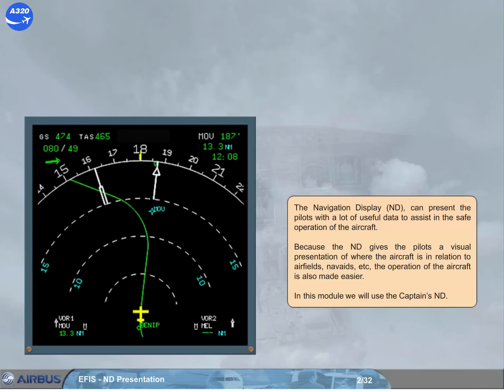The navigation display, or ND, can present the pilots with a lot of useful data to assist in the safe operation of the aircraft. Because the ND gives the pilots a visual presentation of where the aircraft is in relation to airfields, nav aids, etc., the operation of the aircraft is also made easier. In this module, we will use the captain's ND.